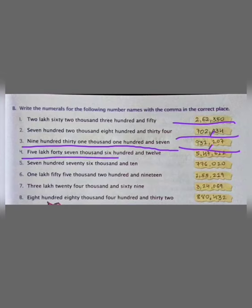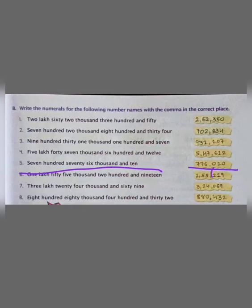Then number 4: 5 lakh 47612. This is the Indian place value system. So we will write 5, then 47, then comma, then 612. Now number 5: 776,010. So we will write 776, then comma, then 010 — you can see here.